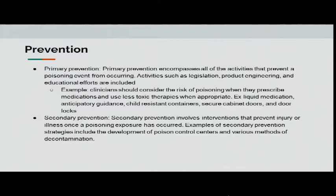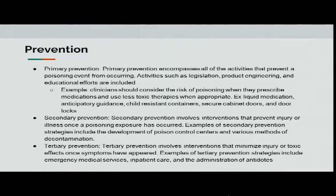Secondary prevention involves interventions that prevent injury or illness once a poisoning exposure has occurred — such as calling poison control and the various methods of decontamination. Tertiary prevention involves interventions that minimize injury or toxic effects once symptoms have appeared — including emergency medical services, inpatient care, and the administration of antidotes.